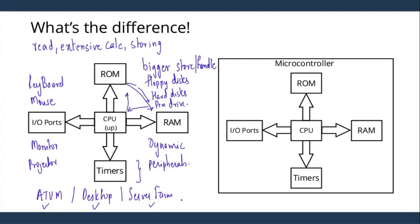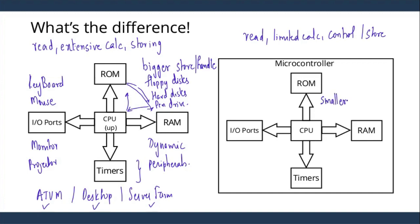Now let us look at a microcontroller. What does the microcontroller do? It will read, it will do limited calculation, and finally it will control using this limited calculation, or maybe also store the data, but generally it will control using this limited amount of data. In this case, the ROM and RAM required is comparatively smaller, because microcontrollers are used in systems or applications where the program is generally fixed.